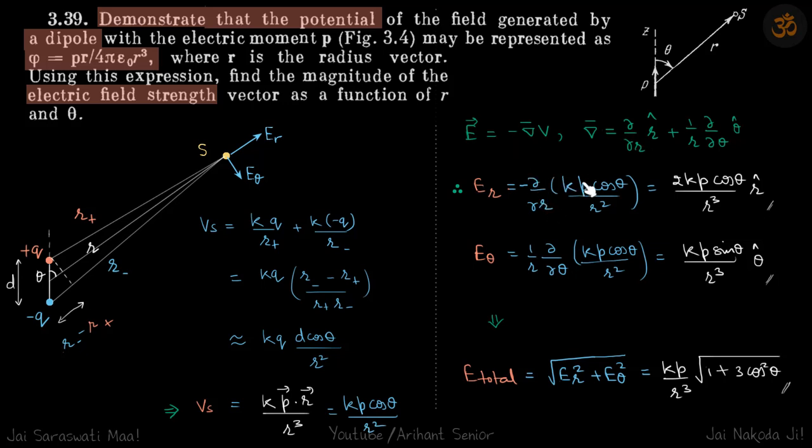The first term will be -∂/∂r of (kp cos θ)/r², this will be here, and Eθ will be same thing for this side. This will be too long an equation so I just broke it into two parts.